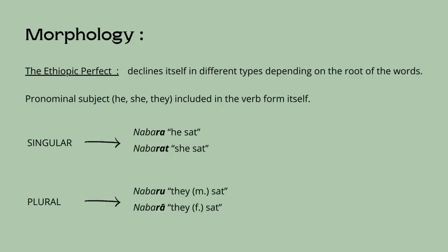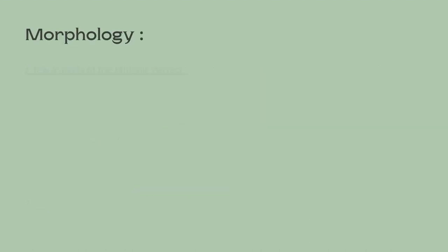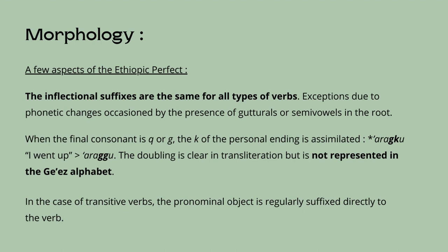The Ethiopic perfect corresponds to the English simple past or present perfect. The pronominal subjects — he, she, they — are included in the verb form itself and do not need to be expressed separately. The inflectional suffixes of the perfect are the same for all types of verbs. Deviation from the norm may occur because of phonetic changes occasioned by the presence of gutturals or semi-vowels in the root. When the final consonant is a q or a g, the k of the personal ending is assimilated, as in the example for 'I went up.' The doubling is clear in transliteration but is not represented in the old Ethiopian alphabet. In the case of transitive verbs, the pronominal object is regularly suffixed directly to the verb.